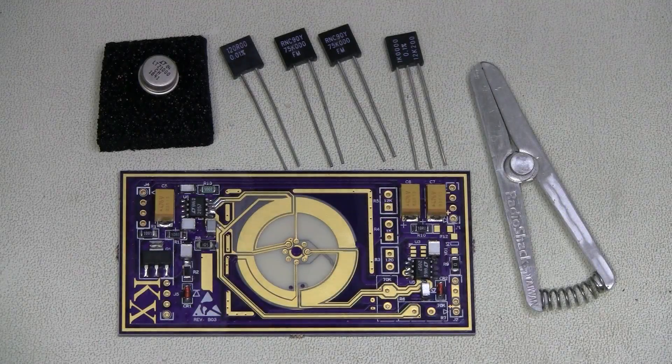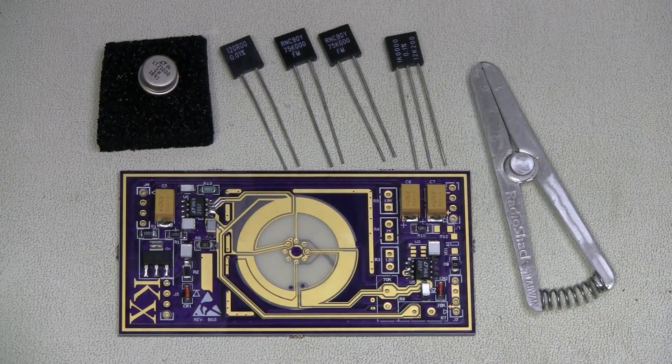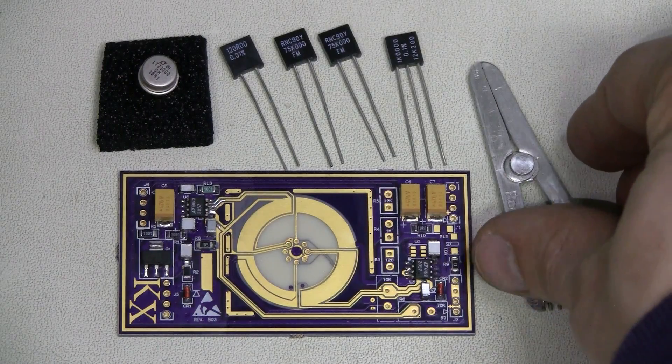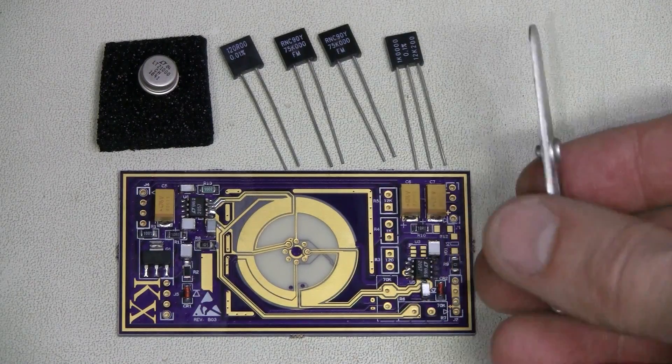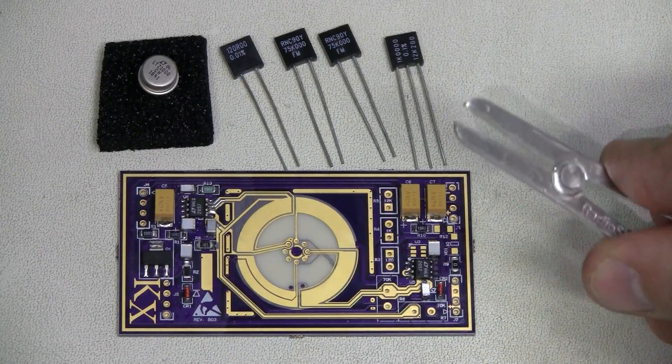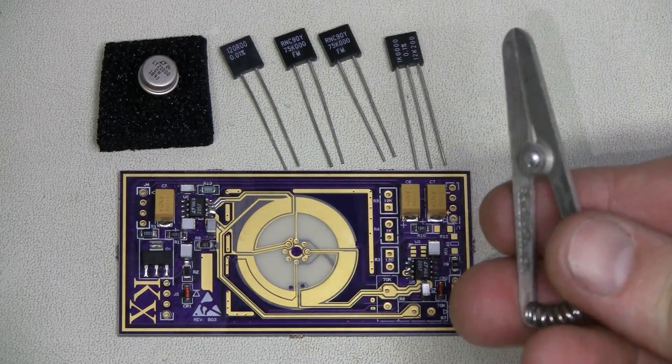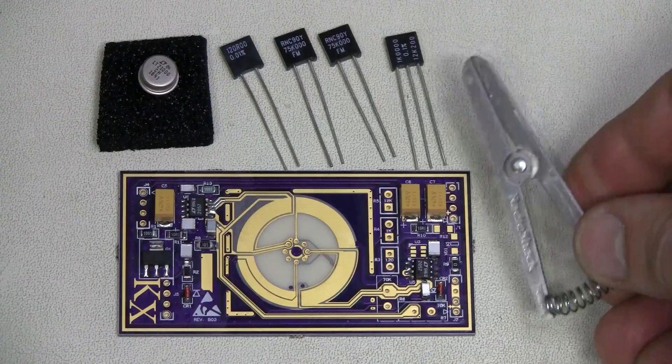Now it's time to solder the most critical through-hole components. I am going to use this clip, which is supposed to be used on each leg as a heat sink during soldering to reduce thermal stress.